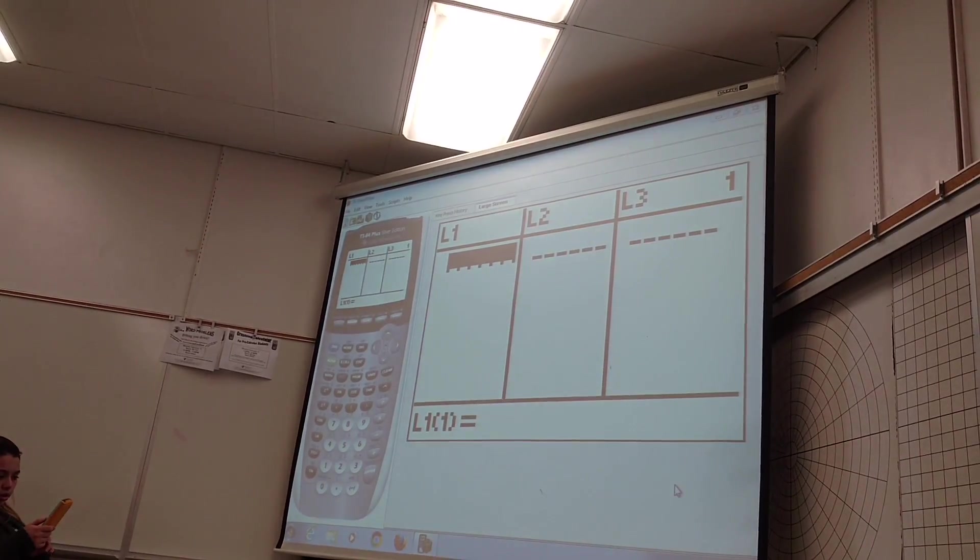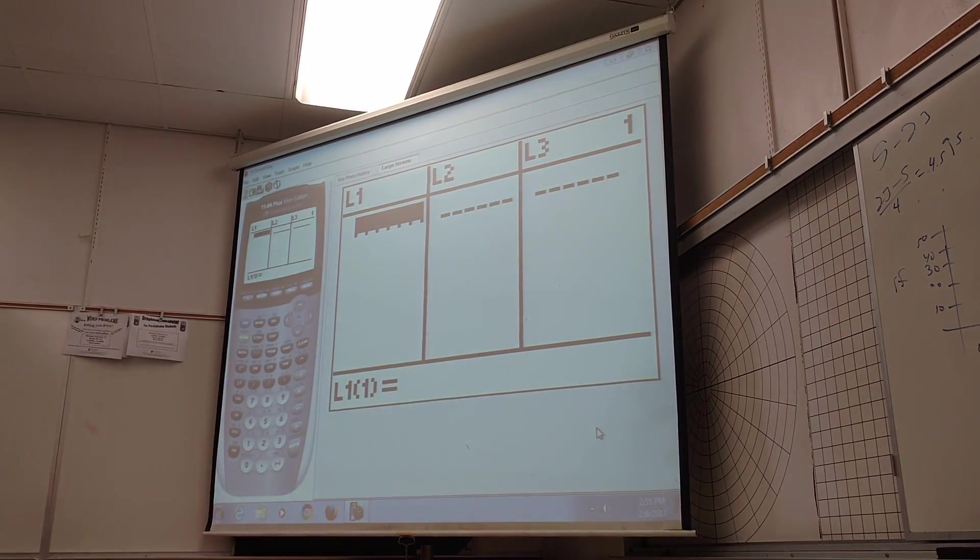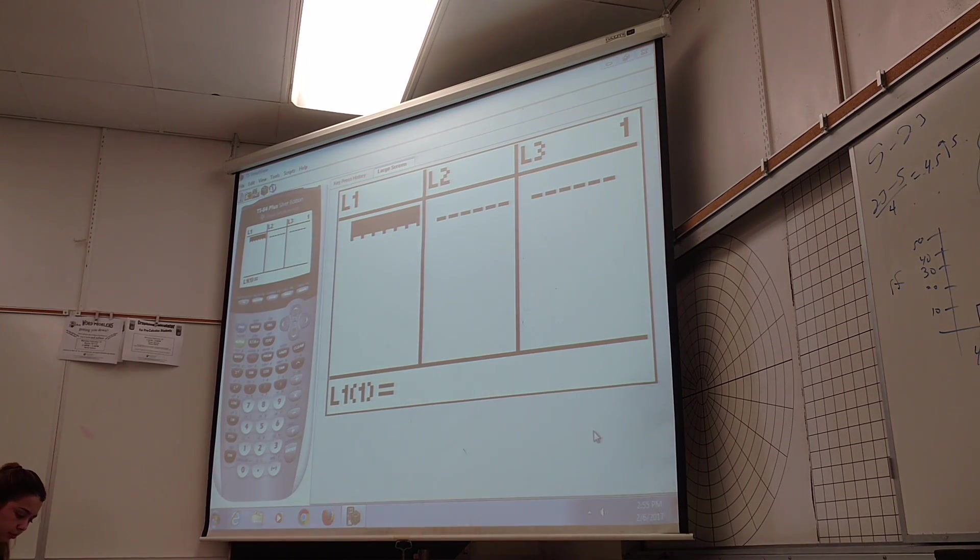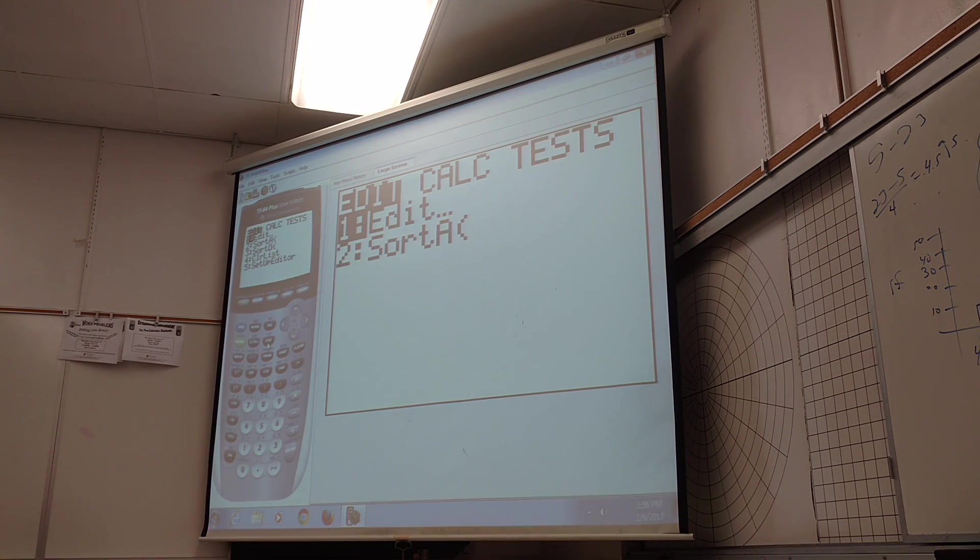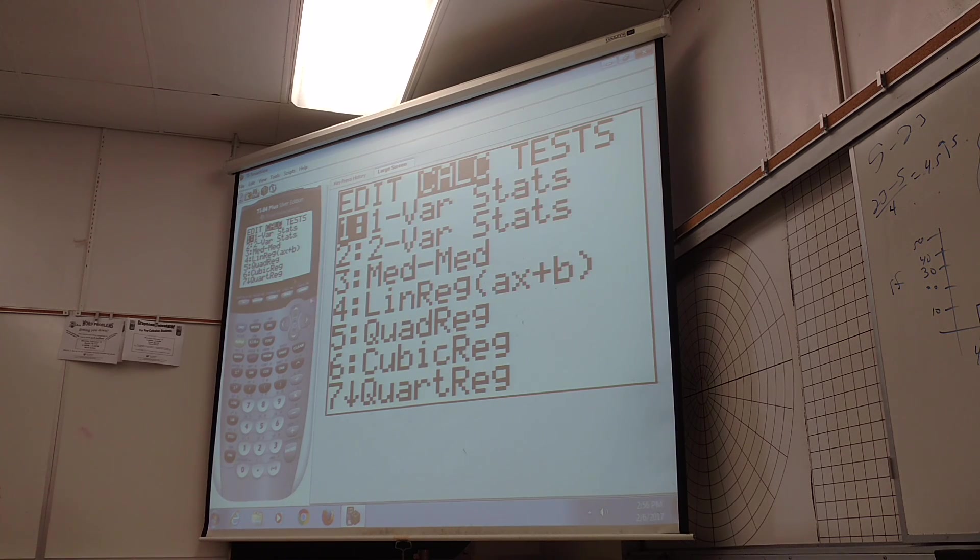Do you see how it says edit? So let me show you. Once you hit the stat button, this is where you end up. I'm sorry, hit the stat button, you end up here. Now here's calculate. If you hit the over button, then you have all these things you can do.